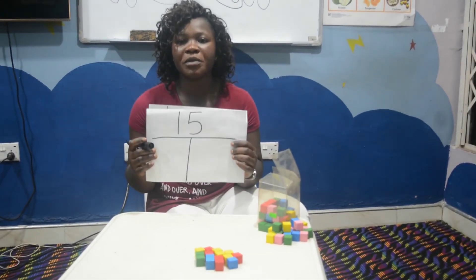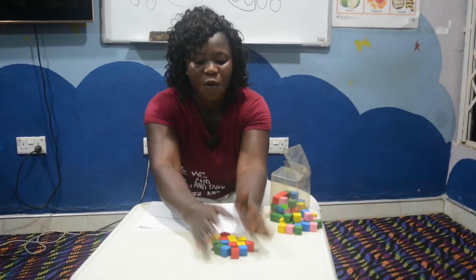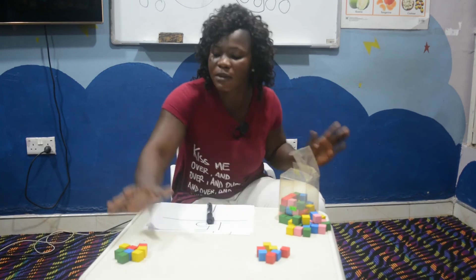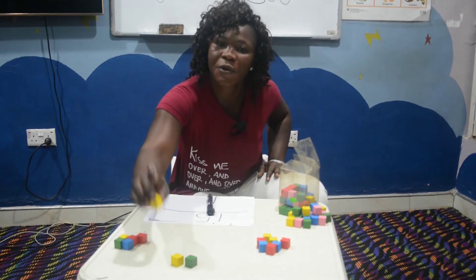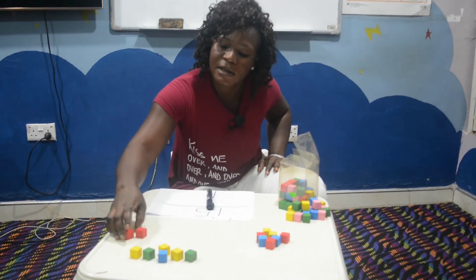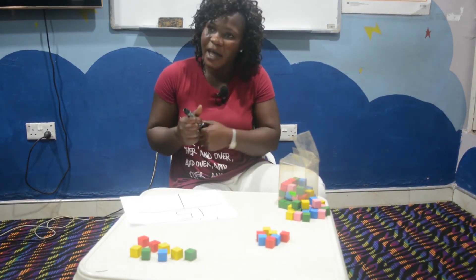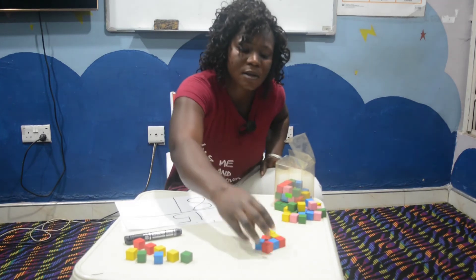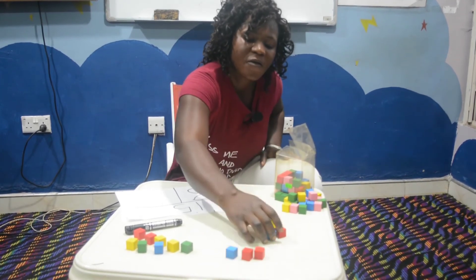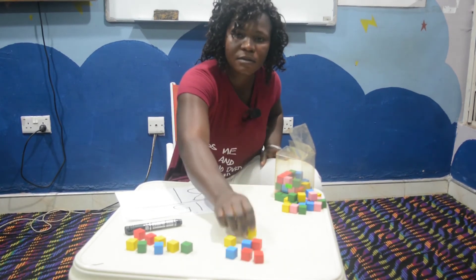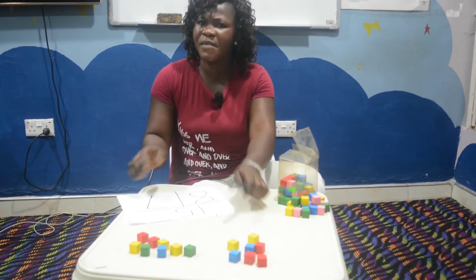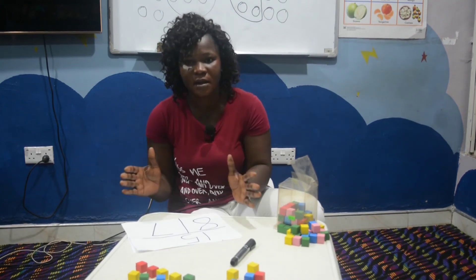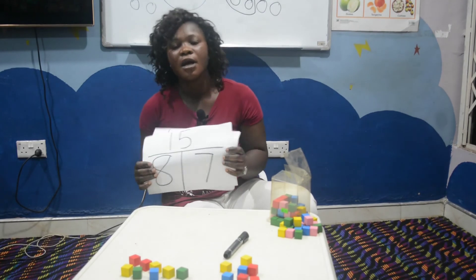The same 15 can also be decomposed in another way. I have my 15 already counted here, so I can decide to separate it any way I like. Let's count the first group being separated: 1, 2, 3, 4, 5, 6, 7, 8. Write it there — 8. Then the next group: 1, 2, 3, 4, 5, 6, 7. I got my 7, so I write it there. This means that 15 can be decomposed as 10 and 5, which gives me 15, and also 8 and 7, which also gives me 15.